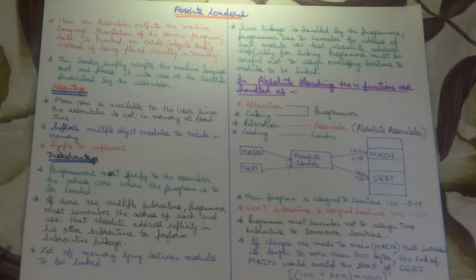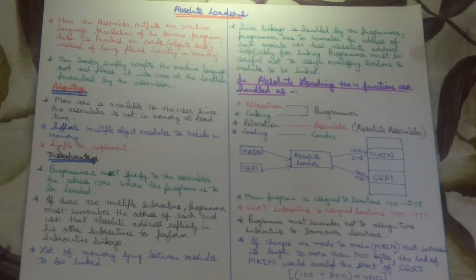The loader accepts the machine language text and the assembler tells the loader where to place this text. The loader places it at that location. This is the work of absolute loaders.